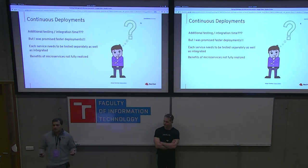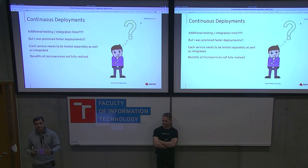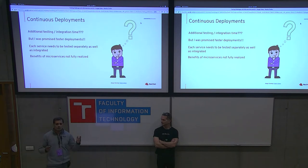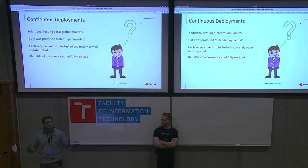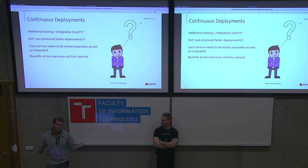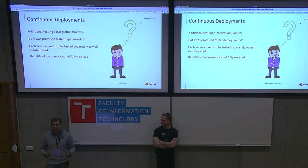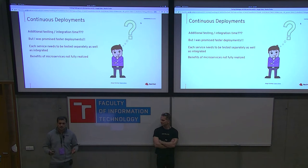So if there's more testing overhead, what about continuous deployments? The whole premise of microservices was faster development, faster deployments, and eventually continuous deployments. Each service needs to be tested independently but also in an integrated fashion — you can't just test a single microservice, because it has touch points with every other microservice within your overall application. All of those need to be tested in conjunction in your pre-prod environment before you can release that particular microservice. Consequently, some of the benefits promised by microservices are not fully realized.